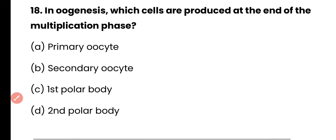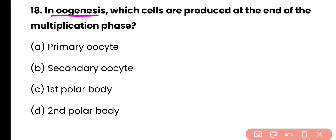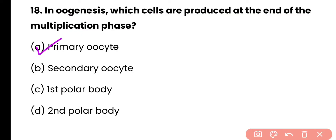Question 18: In oogenesis, which cells are produced at the end of the multiplication phase? Options: primary oocytes, secondary oocytes, first polar body, or second polar body. Correct answer is option A. The multiplication phase involves mitosis, and at the end of mitosis in oogenesis, the oogonium is further modified into the primary oocyte, which is a diploid cell.